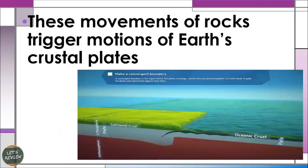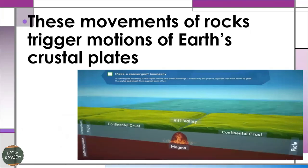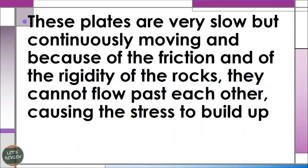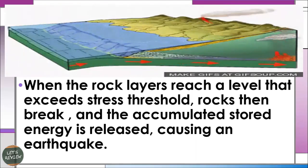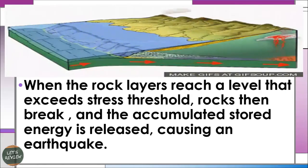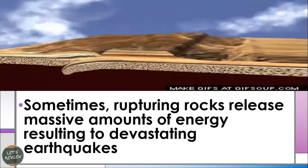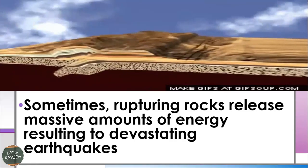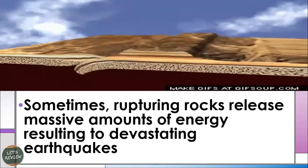These movements of rocks trigger motions of Earth's crustal plates, which are very slow but continuously moving. Because of the friction and rigidity of the rocks, they cannot flow past each other, causing stress to build up. When rock layers reach a level that exceeds the stress threshold, rocks break and the accumulated stored energy is released, causing an earthquake. Sometimes, rupturing rocks release a massive amount of energy resulting in devastating earthquakes.